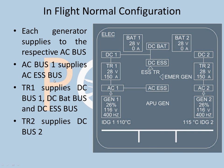In-flight normal configuration: both generators are running and each generator is supplying to its respective bus — generator 1 to AC bus 1, generator 2 to AC bus 2. AC bus 1 supplies the AC essential bus. TR1 supplies DC bus 1, and it also supplies DC bat and DC essential. TR2 supplies DC bus 2. The left-hand side is the heavier side, supplying AC essential, DC bat, and DC essential as well.